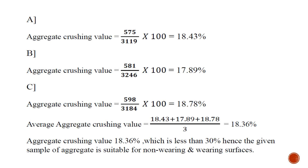For Sample B the aggregate crushing value is 17.89%, and for Sample C it is 18.78%. Add these three values and divide by 3 to get the average aggregate crushing value, which is 18.36%. Since this value is less than 30%, the aggregates are suitable for both non-wearing and wearing surfaces.